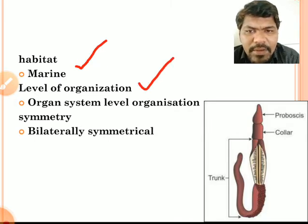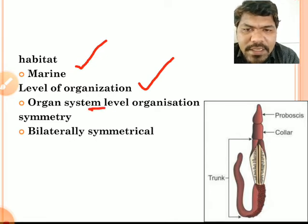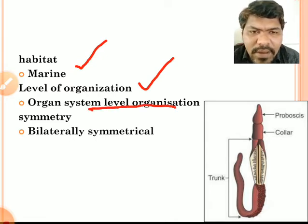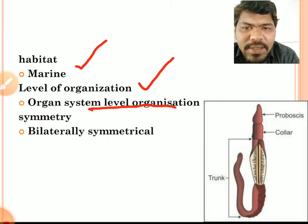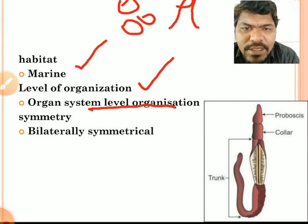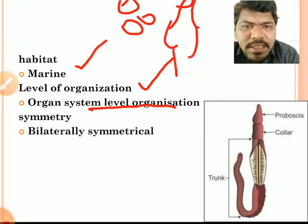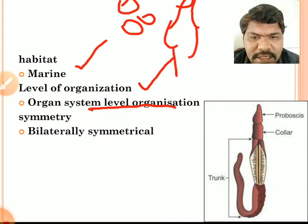Level of organization: hemichordates exhibit organ system level of organization. We already know that in organ system level of organization, organs which are involved in the same function combine together and form organ systems. An example of an organ system is the digestive system.